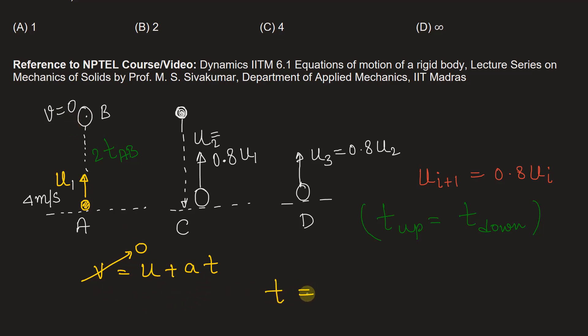So from here, T will be equal to negative u upon g, acceleration due to gravity. Now acceleration due to gravity acts in the opposite direction, so we can write u by g, because g is negative.